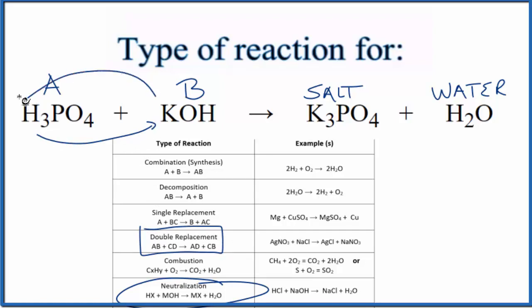So now we have K3PO4 here—potassium phosphate—and the hydrogen goes with the OH, that's HOH which is H2O. So it's a double replacement reaction.